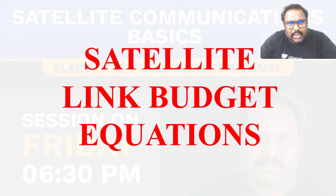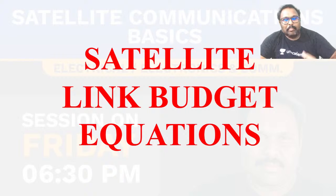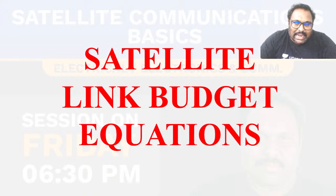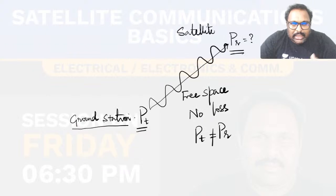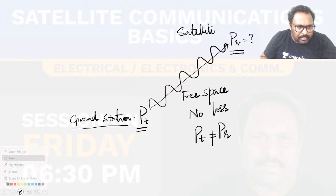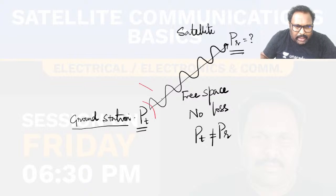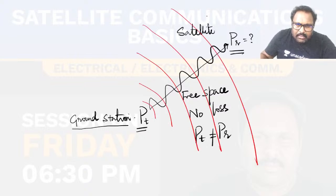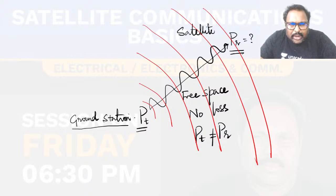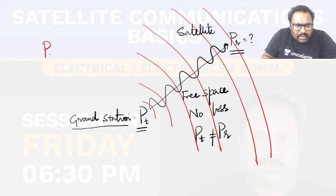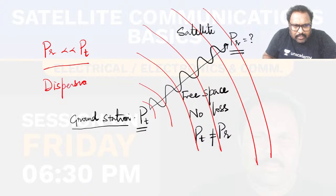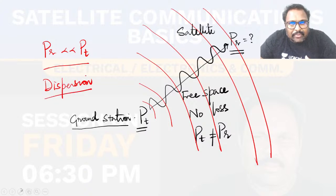Satellite link budget equations — don't think 'budget' means it's about money. Budget here refers to power. It's satellite link power calculations, not money or launch cost calculations. The received power PR depends on transmitted power PT because power generally spreads out. PT is not equal to PR because the power spreads out — scattering. As the wave travels further and further, you get only a small fraction of the power. PR is quite less than PT.